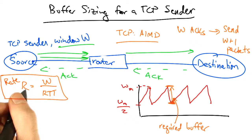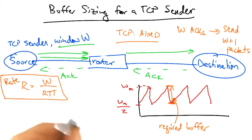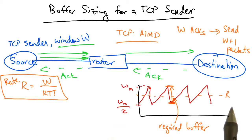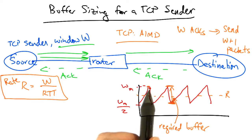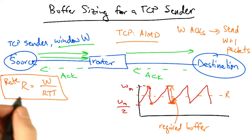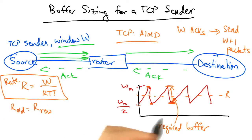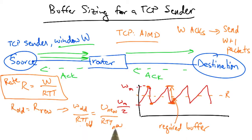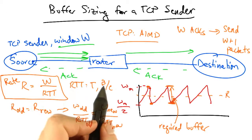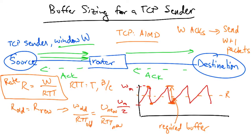Now we know the rate is W over RTT, and we'd like the sender to send at a common rate R. And if we'd like the sender to be sending at the same rate before and after it experiences a loss, then we know that the rate before the drop must equal the rate after the drop. So then we can set these two rates equal. We know that the RTT is part transmission delay T, and part queuing delay, which is the maximum buffer size of the bottleneck link divided by the capacity of the bottleneck link.